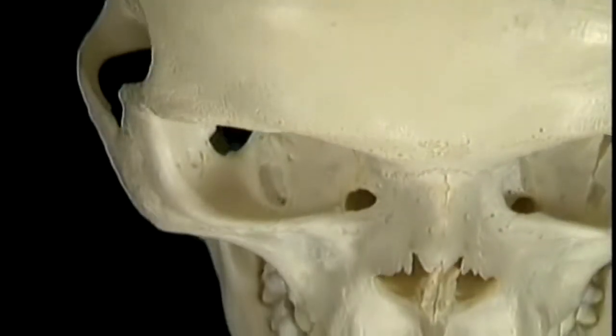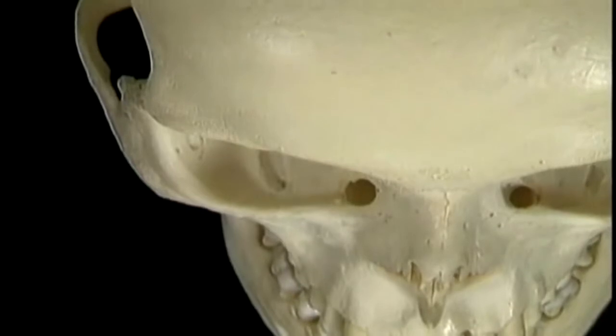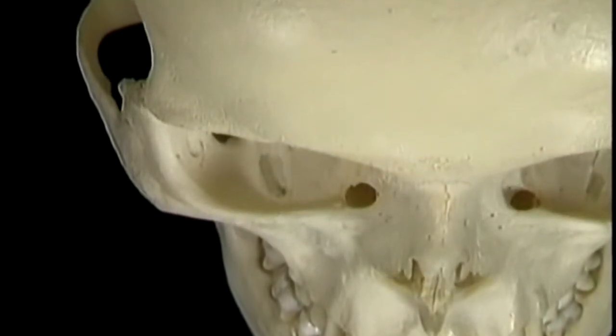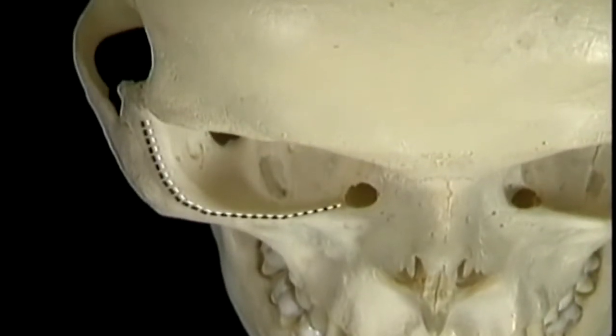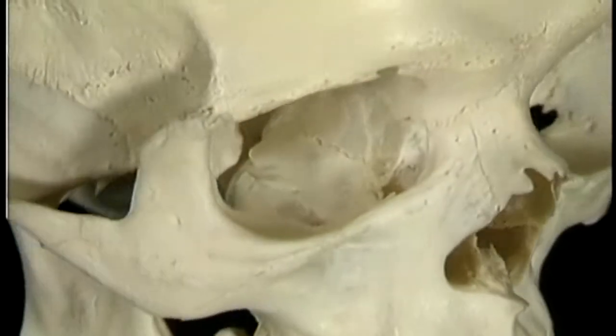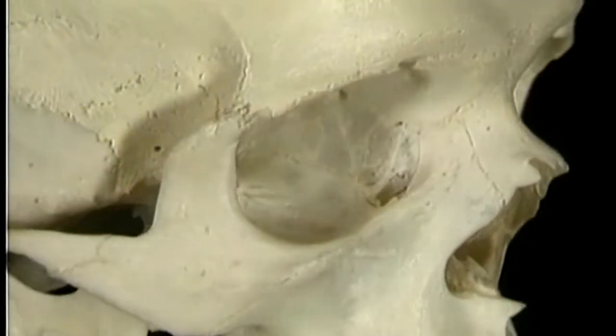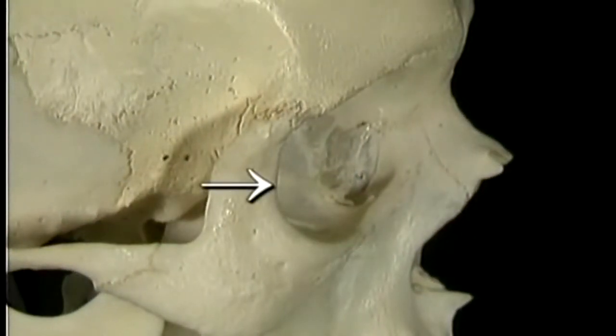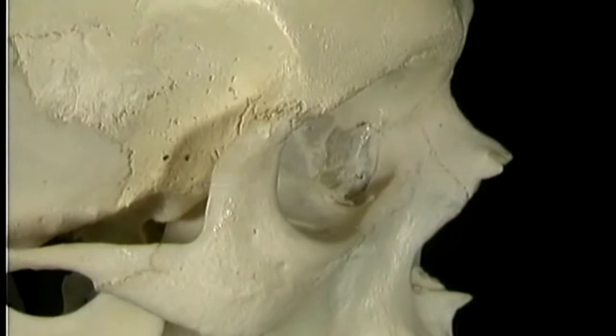The orbital margin curves distinctly backwards both above and below. Because of this, the orbital margin is much further back laterally than it is medially. This reflects an important fact about the orbital cavity: it doesn't face directly forwards.